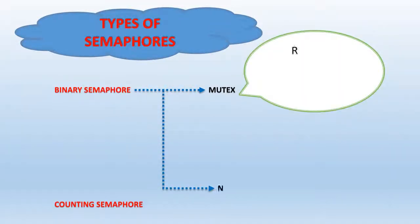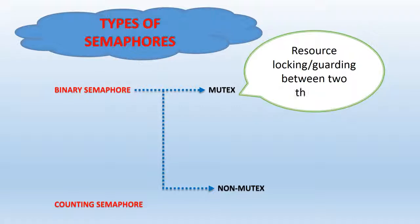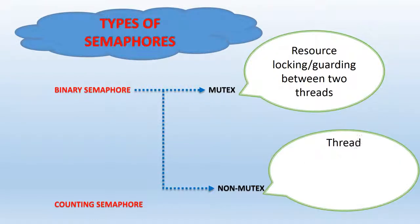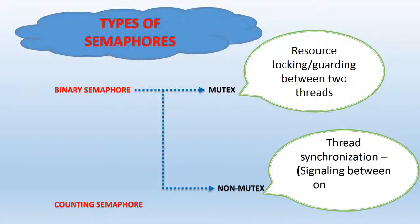The use or application of a mutex is to guard a resource between two threads, popularly called resource locking. I have demonstrated a mutex semaphore with great examples and animations in my other videos. A non-mutex binary semaphore can be used for signaling purposes between two threads, which is popularly called inter-thread synchronization.